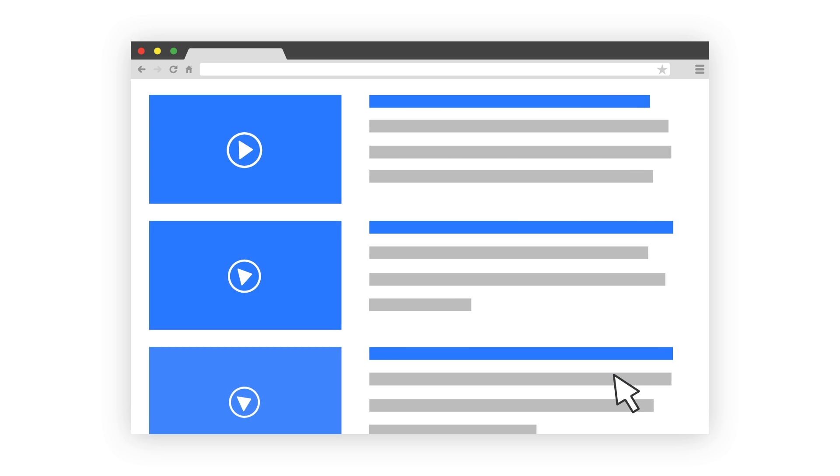For a content publisher, the macro conversion might be engaging with a particular amount of content with a micro conversion of clicking into an article.